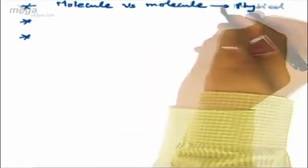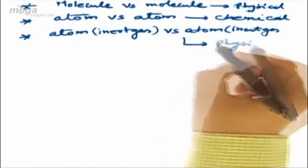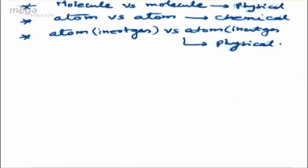We can conclude: in the case of molecule versus molecule, the bond will be physical in nature. Atom versus atom — it will be chemical. Inert gas atom versus inert gas atom — the bond shall be physical. So when the two bonding species are molecular, the bond is physical; if they are in their atomic state, the bond is chemical; and if they are in the atomic state but are inert gases, we shall have physical bonding.